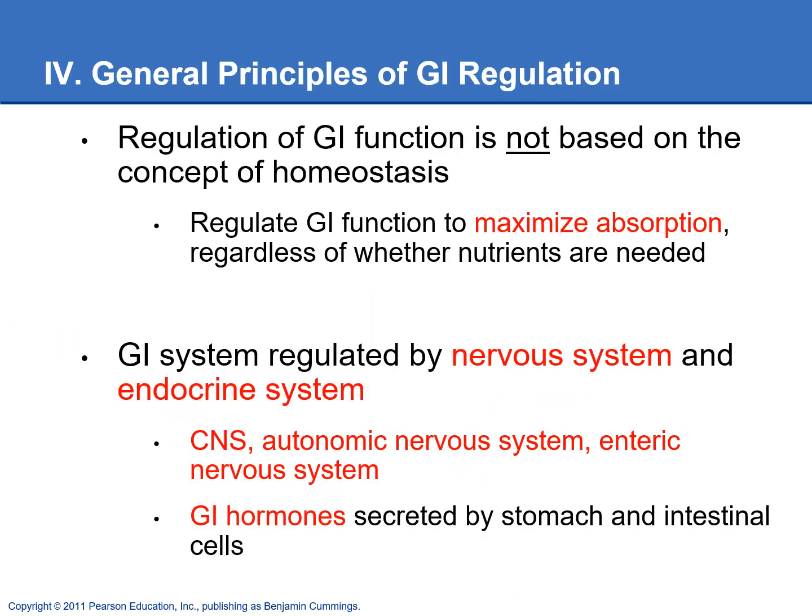GI regulation is really different from other systems because it's not based on homeostasis. GI regulation is based on maximizing the most nutrients you can absorb — because we evolved when there were no grocery stores and we never knew when our next meal was coming. We need to absorb as much as we can. It would be nice if we only absorbed what the body needed, but unfortunately we absorb everything we can, and if we don't use it, we store it as fat.